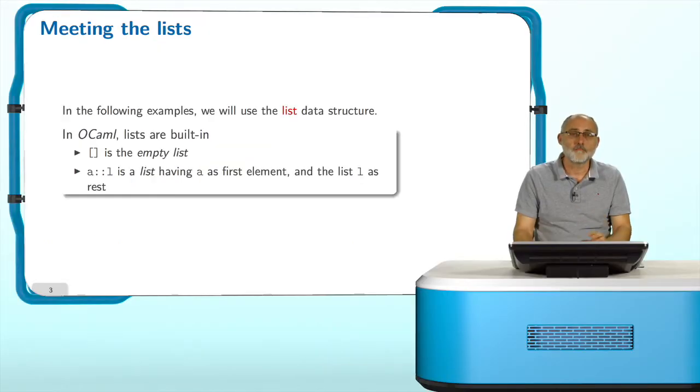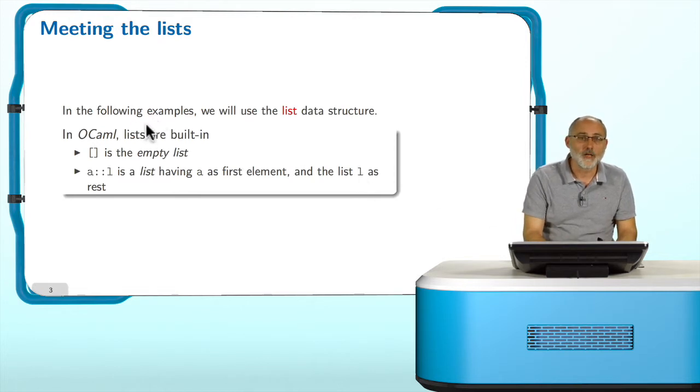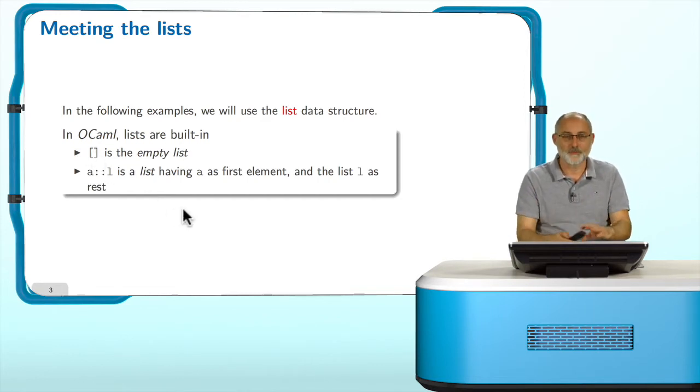So let's start by meeting the list data structure. This data structure is built-in in OCaml. It is predefined. You have special syntax for this. In particular, these square brackets, open and closed, is just a representation of the empty list. And this a, colon, colon, L is a list that contains a, the first element, and L as the rest of it. And of course, you have already seen an example where if you put elements inside the list, that's a list with a few more elements in it.